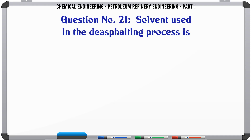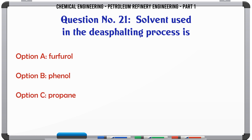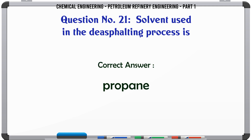Solvent used in the deasphalting process is: A. Furfural, B. Phenol, C. Propane, D. Hexane. The correct answer is Propane.